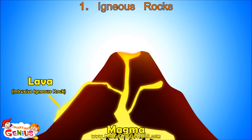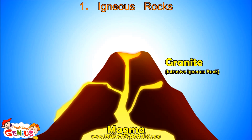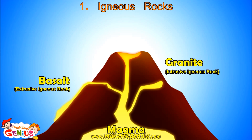Whatever magma cools inside under the surface of the earth changes into granite — a kind of igneous rock. The lava which comes out and gets in touch with air cools down faster. This cooled down lava forms basalt rocks, which are also igneous rocks.